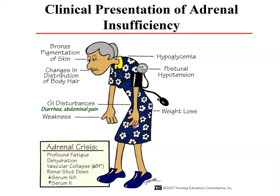The clinical presentation of Addison's disease includes brown skin — because without cortisol feedback there is excess ACTH, which contains an MSH sequence and colors the skin. Other features include changes in body hair distribution, hypoglycemia, postural hypotension, weight loss, GI disturbances such as diarrhea and abdominal pain, and weakness.